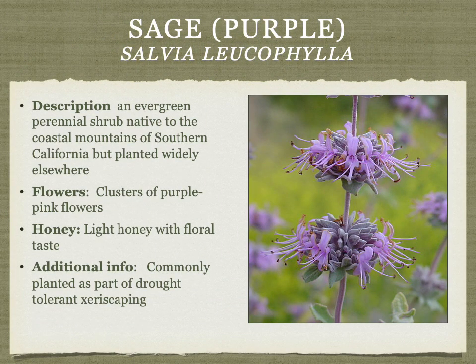Purple sage is less common than the other two types — a light honey with a floral taste. It's commonly planted for drought-tolerant xeriscaping and landscaping, found most commonly in Southern California.